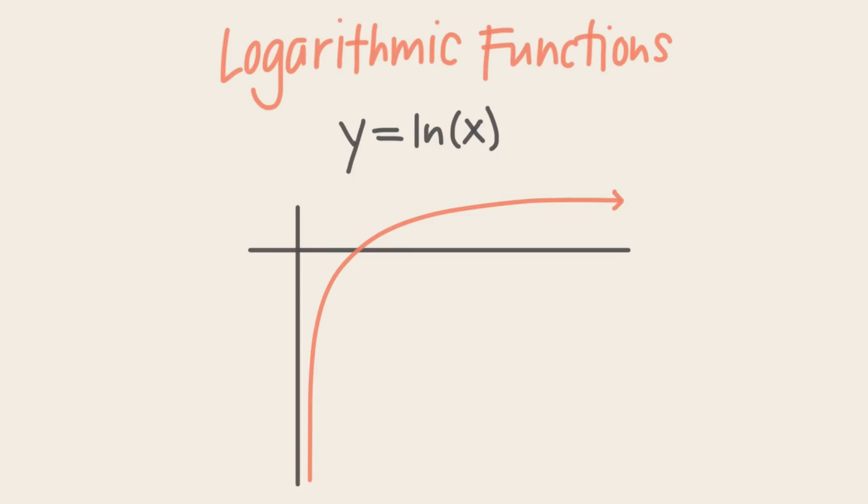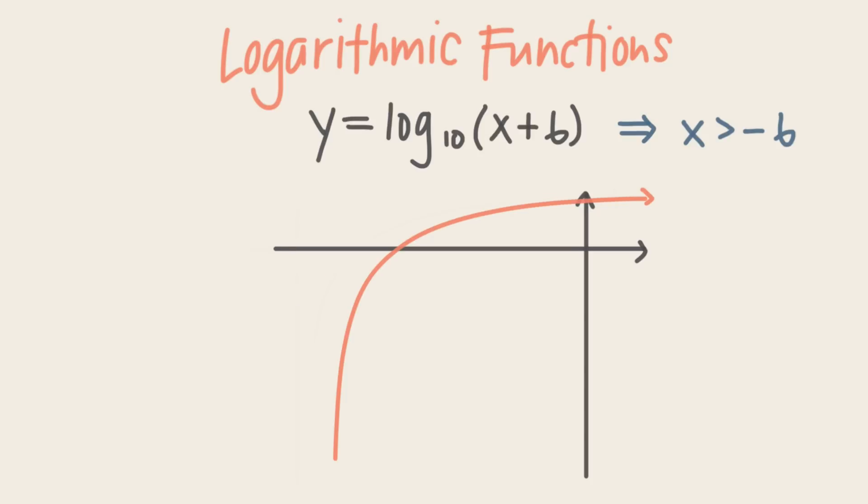Looking at the graph of y equals natural log of x, it looks like as x approaches 0 from the right side, y approaches negative infinity. Since logarithms are not defined for numbers that are not positive, there will be a vertical asymptote at 0. Other logarithmic functions similarly have vertical asymptotes wherever the input to the function, or the argument, is not positive.